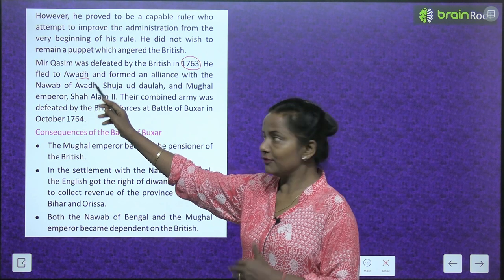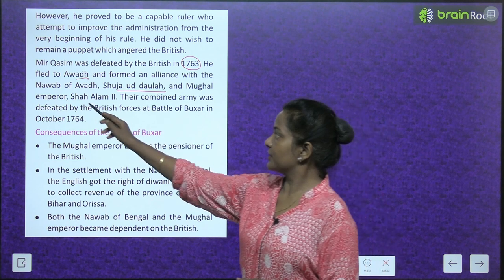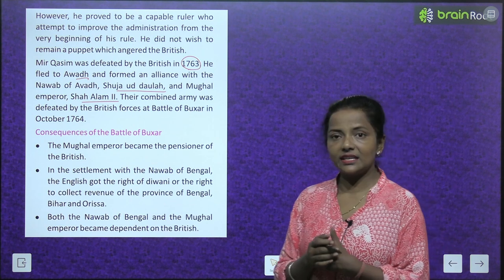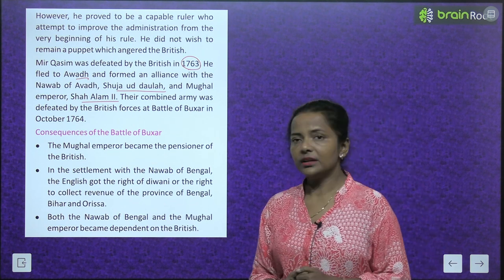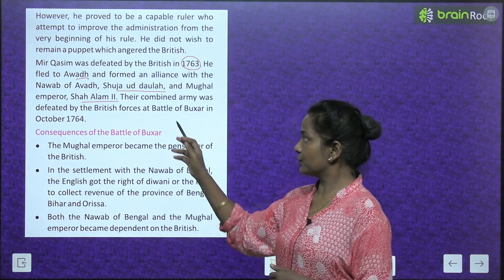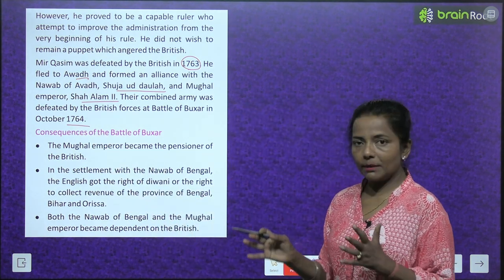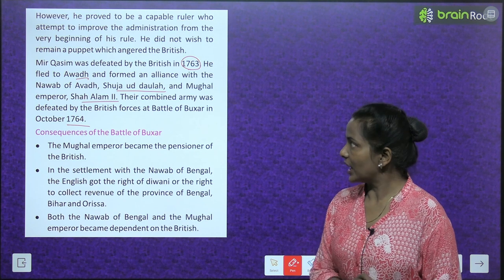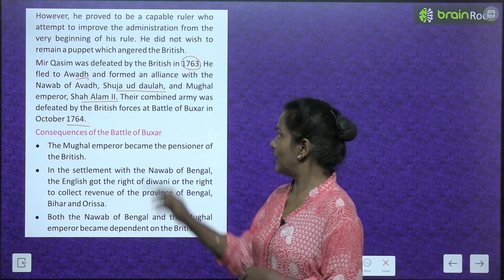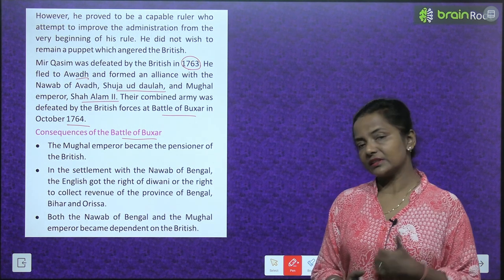Mir Qasim fled to Awadh and formed an alliance with the Nawab of Awadh, Shujaud Daula, and Mughal Emperor Shah Alam II. Their combined army was defeated by the British forces at the Battle of Buxar in October 1764.